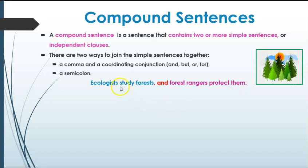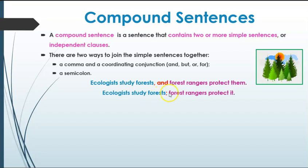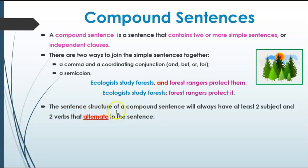For example: 'Ecologists study forests, and forest rangers protect them.' The first independent clause is 'Ecologists study forests' — 'ecologists' is the subject, 'study' is the verb. The second clause is 'forest rangers protect them' — 'rangers' is the subject, 'protect' is the verb. Each could stand on its own. We combine them with a comma and the conjunction 'and,' or we could use a semicolon alone. It's always a semicolon or a comma-plus-conjunction — never just a comma.